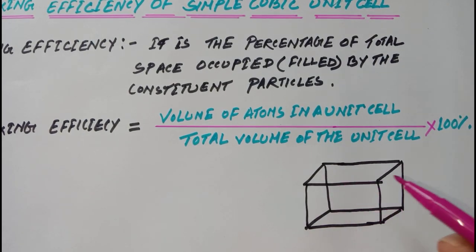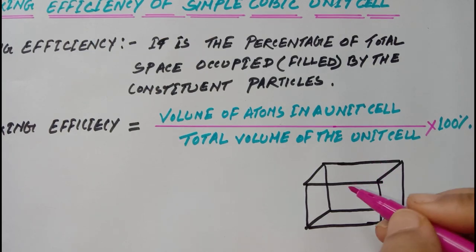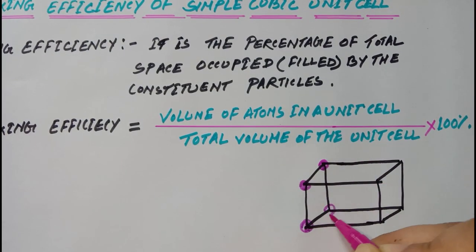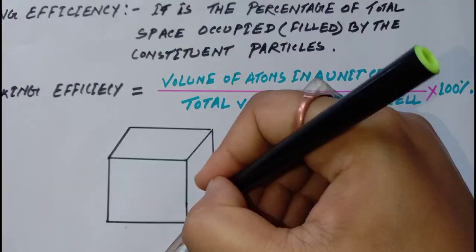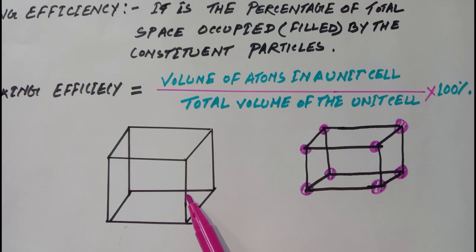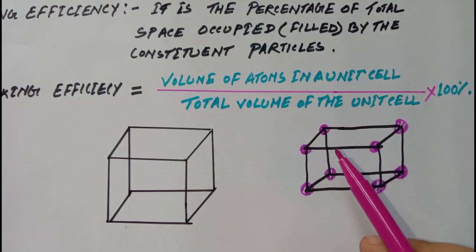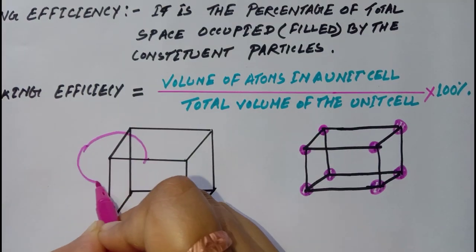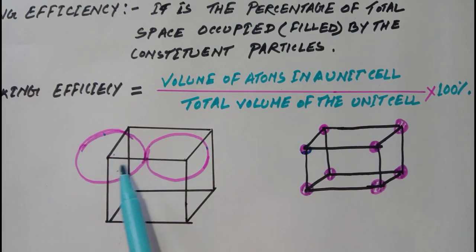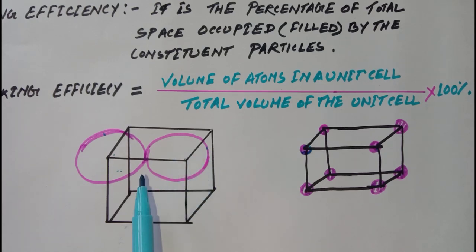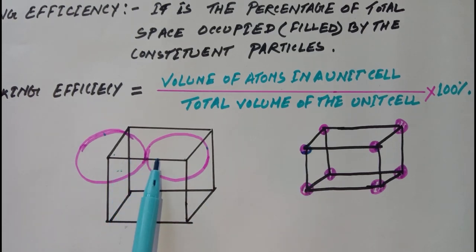In a simple cubic unit cell, the constituent particles or atoms are present only at its 8 corners. Considering two atoms: all atoms in a unit cell are closely packed with each other, and these atoms touch each other along the edges. So they are considered as hard spheres.